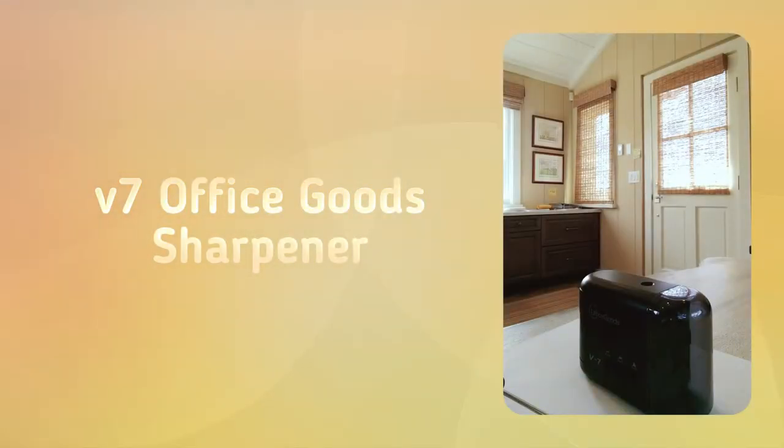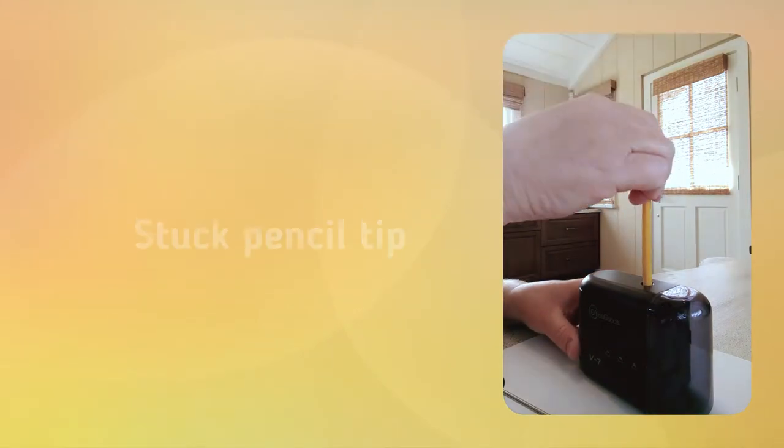Today we have a V7 Office Goods sharpener and it has a stuck point in it. It broke off and for some reason did not get chewed up by the helical blade.